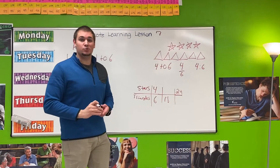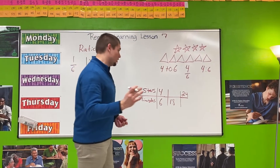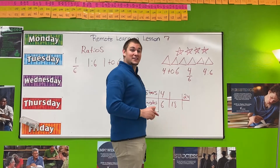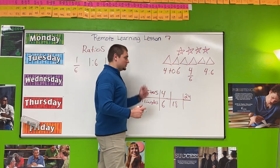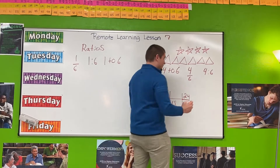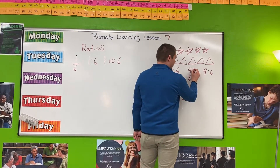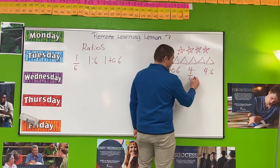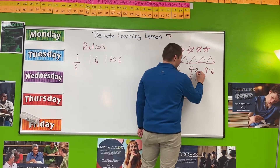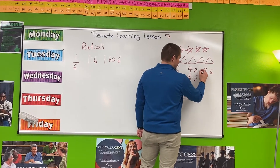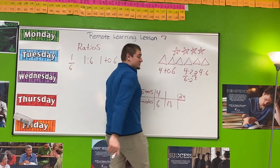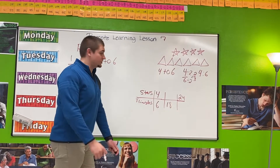Whenever we are doing ratios, we must reduce our ratios by dividing by the greatest common factor. Think back to lesson number one where we talked about that. The greatest common factor for four and six is two, so I'm going to divide the numerator and the denominator by two to get our reduced ratio, which is two over three. Two over three is an equivalent ratio to four over six.